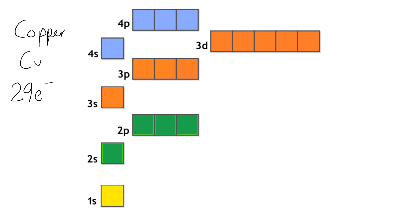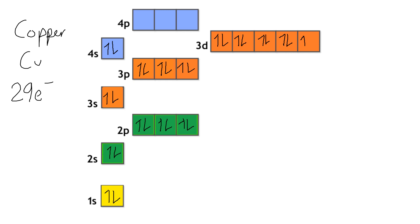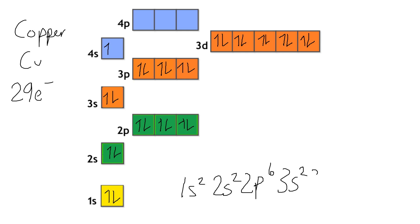The other element you need to be aware of is copper. Copper has got 29 electrons. The misconception for copper is that it would have the configuration 4s2, 3d9. But actually, it does a very similar thing to chromium — it promotes the electron from the 4s into the 3d to give 4s1, 3d10, which is far more stable. You don't need to know the reasons why, but you do need to remember that it happens. So its full configuration is 1s2, 2s2, 2p6, 3s2, 3p6, 4s1, 3d10.